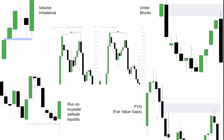That same process applies to an order block, a tap of a fair value gap, or a run on buy side or sell side liquidity. I will always be looking at the higher time frames for these PD arrays for a lower time frame entry based off of price reacting off of them. On top of that, I will be using SMT at the highs or the lows when price runs into these PD arrays or we have a run on liquidity — to stack extra confluence in the direction price is trading.